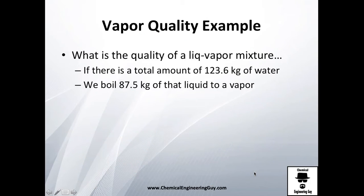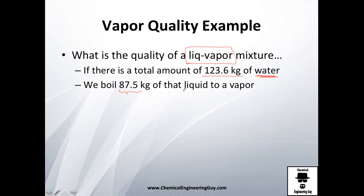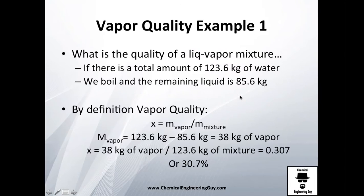Here's another example: what is the quality of a liquid-vapor mixture if there is a total amount of 123.6 kilograms of water, and we boil it until 87.5 kilograms of that liquid have gone to the vapor phase? Our definition of vapor quality is the amount of vapor divided by the total amount of the mixture.